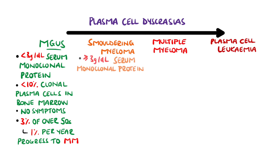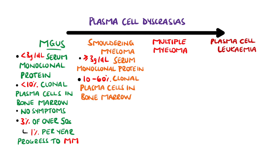Smouldering myeloma is considered a premalignant disease, where there is production of a monoclonal protein, but there are no myeloma-defining events, which we will cover in the diagnosis.